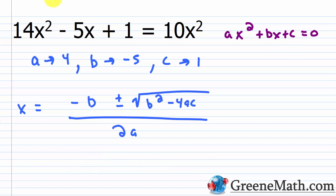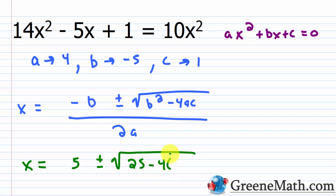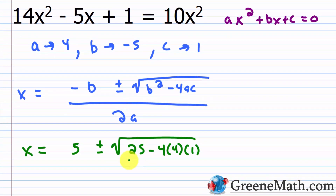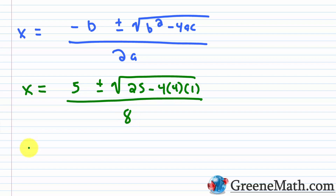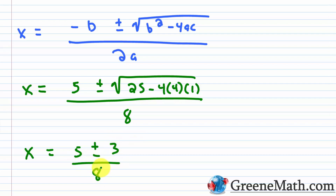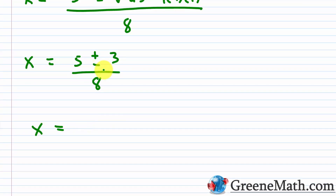Now we plug into the quadratic formula. x equals negative b — b is negative 5, so the negative of negative 5 is 5 — plus or minus the square root of b squared, which is negative 5 squared equals 25, minus 4 times a, which is 4, times c, which is 1. This is over 2 times a, so 2 times 4 equals 8. Simplifying: x equals 5 plus or minus the square root of 25 minus 16, which is 9. The square root of 9 is 3, so we have 5 plus or minus 3 over 8.